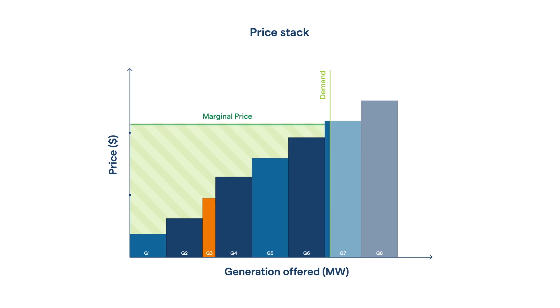This replacement generation is more expensive, so the marginal price rises. Once the planned outage begins as scheduled, the market behaves as forecast in the forward schedules.